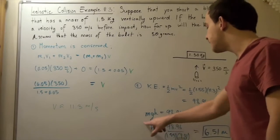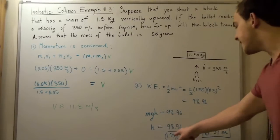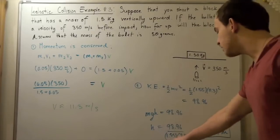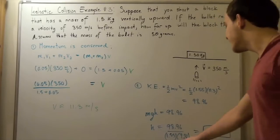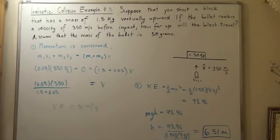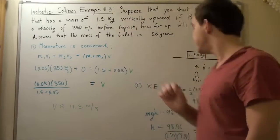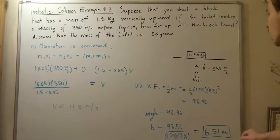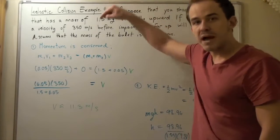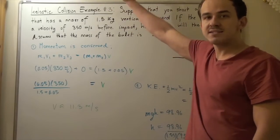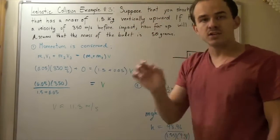We divide by mg and get 98.96 divided by 1.55 times 9.81, which gives us a maximum height of 6.51 meters. Our block and bullet system reaches a height of 6.51 meters before it begins going back down because its velocity at the highest height is 0.